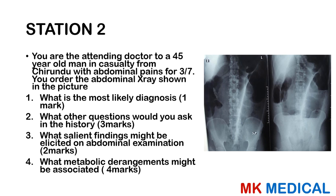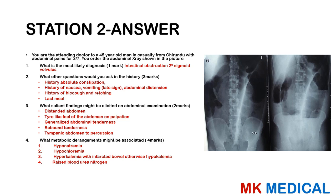As you can see from this x-ray, this is one of those characteristic things that you either know or you don't. This is known as a coffee bean sign — it's very characteristic of sigmoid volvulus. So this is intestinal obstruction secondary to sigmoid volvulus. You would ask for a history of absolute constipation, nausea and vomiting — which happens to be a late sign — and a history of abdominal distension.